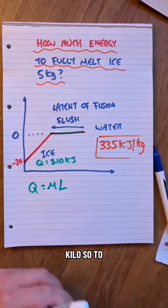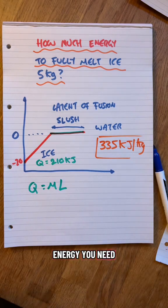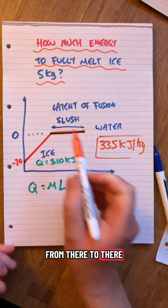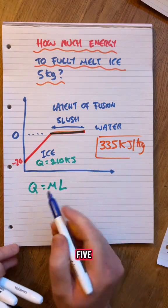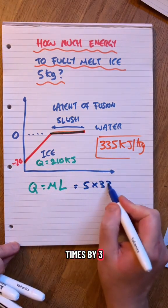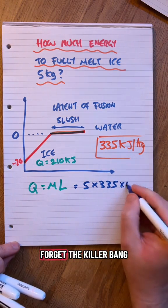335 kilo. So to find how much energy you need to fully melt from there to there, I'm going to go five times 335. Don't forget the kilo.